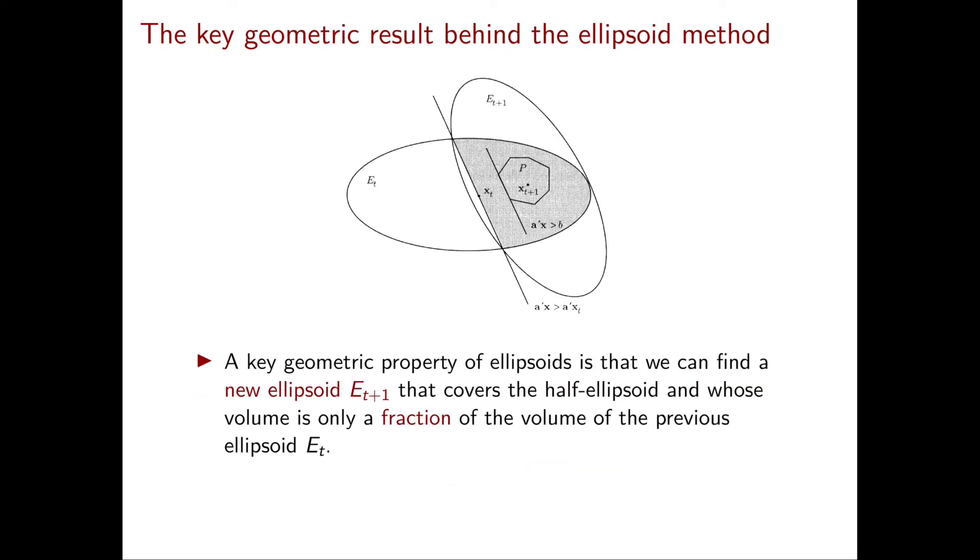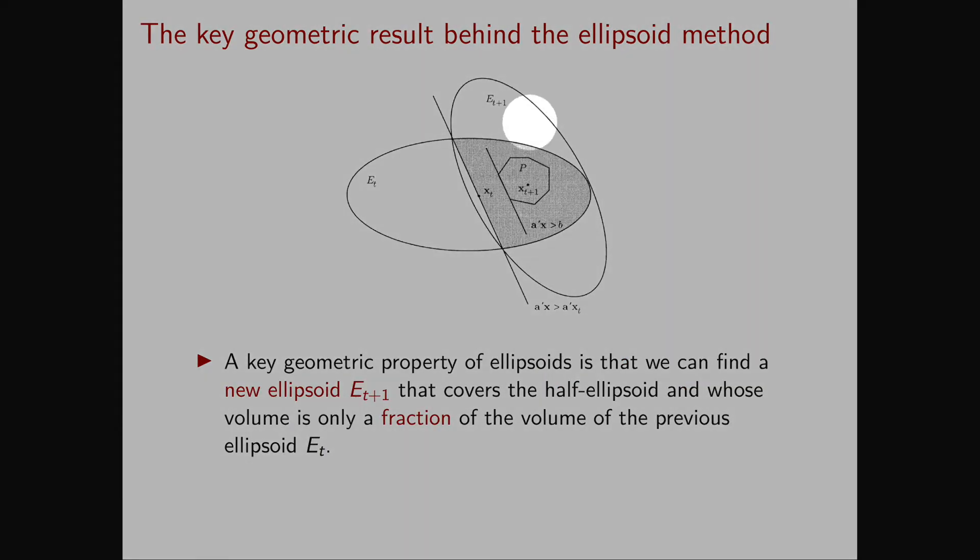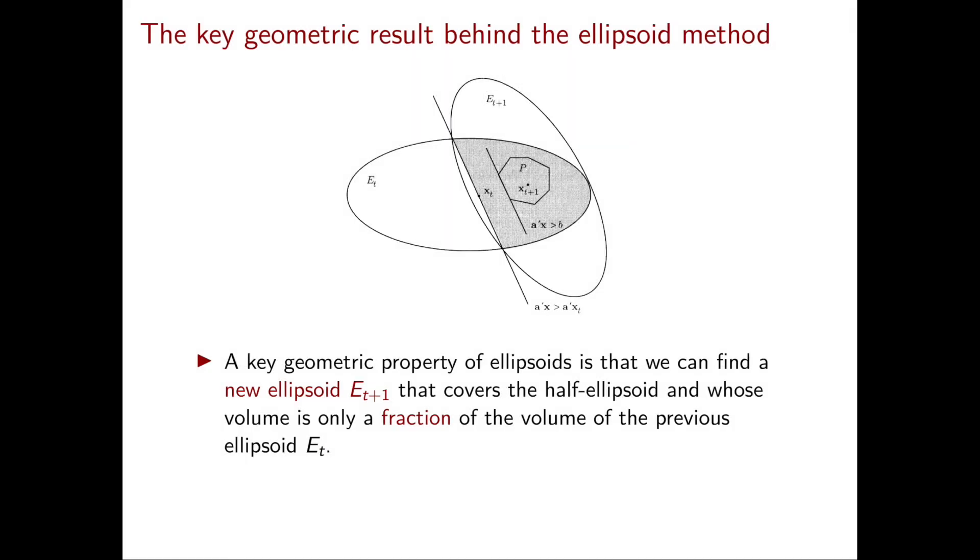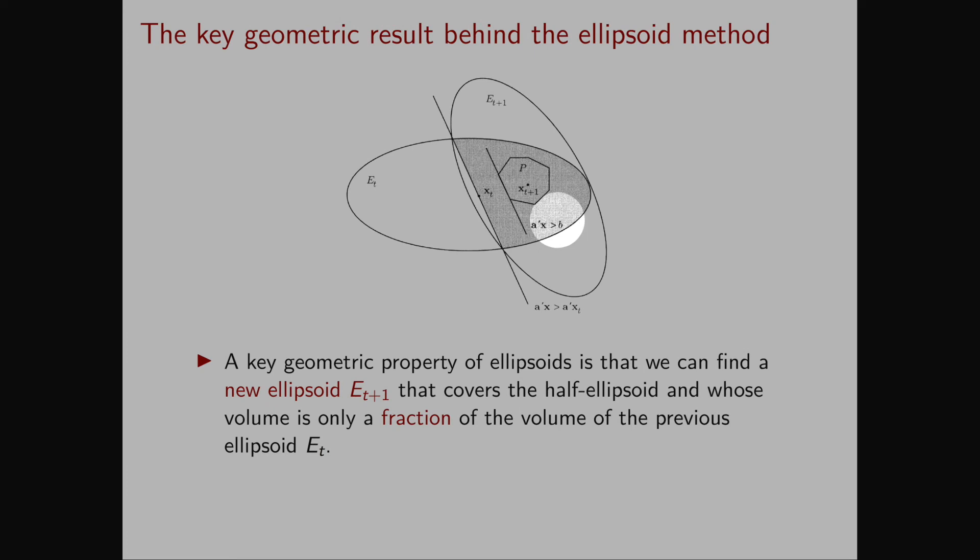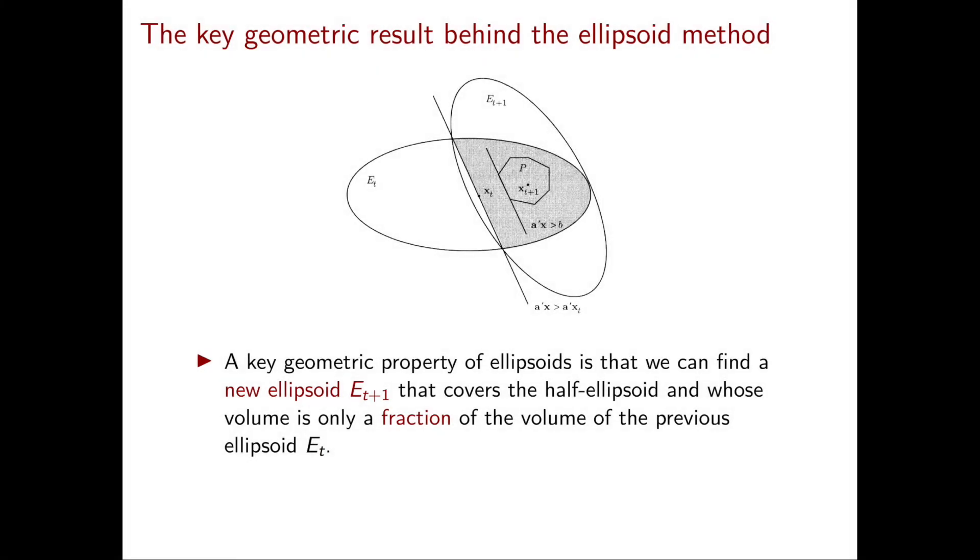Next our ellipsoid algorithm finds a new ellipsoid that is now called E_{t+1} that contains the half ellipsoid that we just discussed. Since in turn the half ellipsoid contains P, also the new ellipsoid contains P.